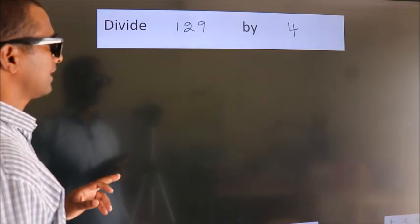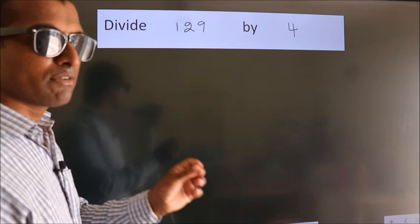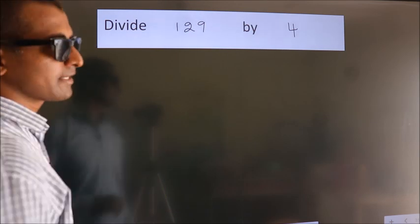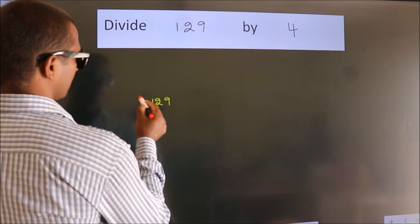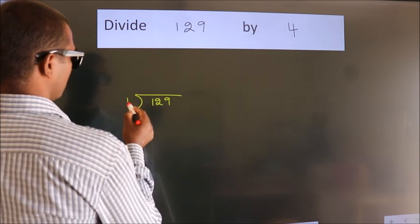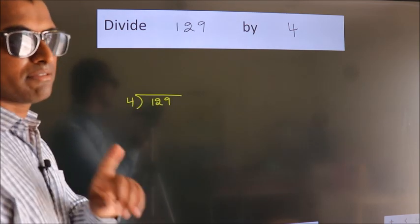Divide 129 by 4. To do this division, we should frame it in this way: 129 here, 4 here. This is your step 1.